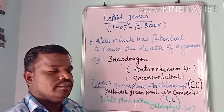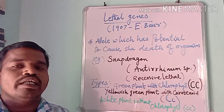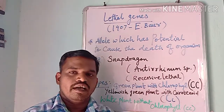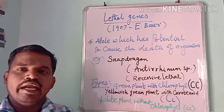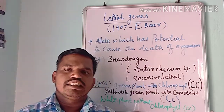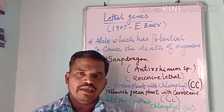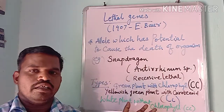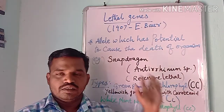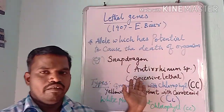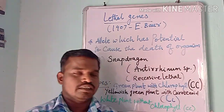These lethal genes will have lethal alleles. Alleles which have the potential to cause the death of an organism are known as lethal alleles. It was identified in snapdragon plants — that is the Antirrhinum species. This Antirrhinum species has recessive lethal genes.